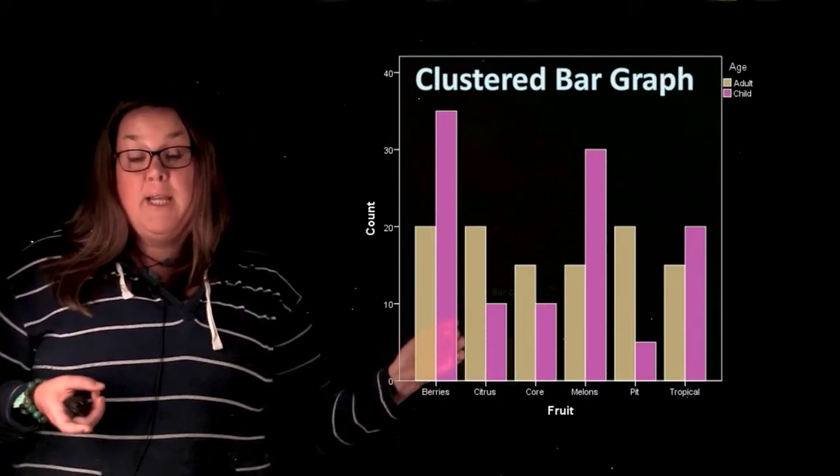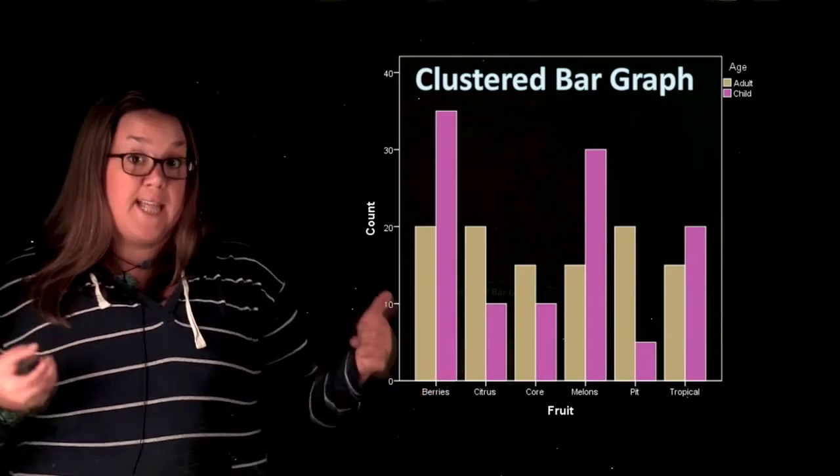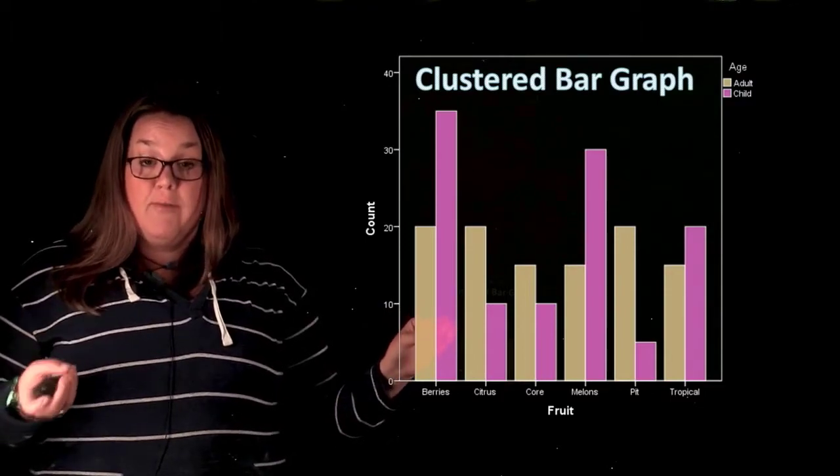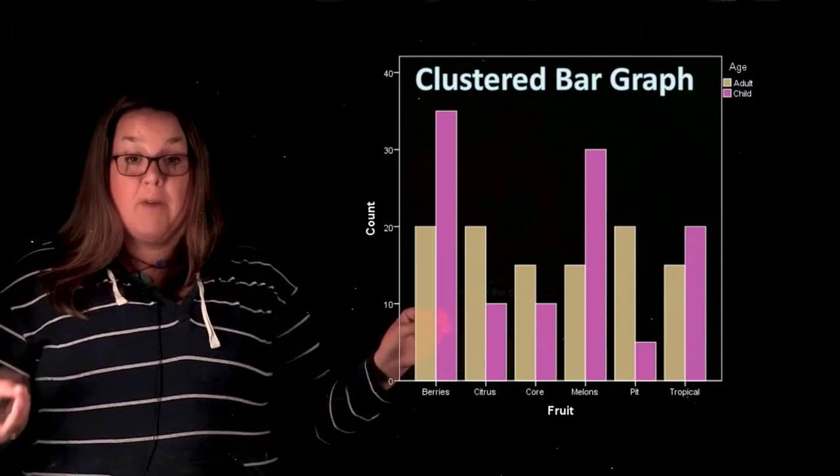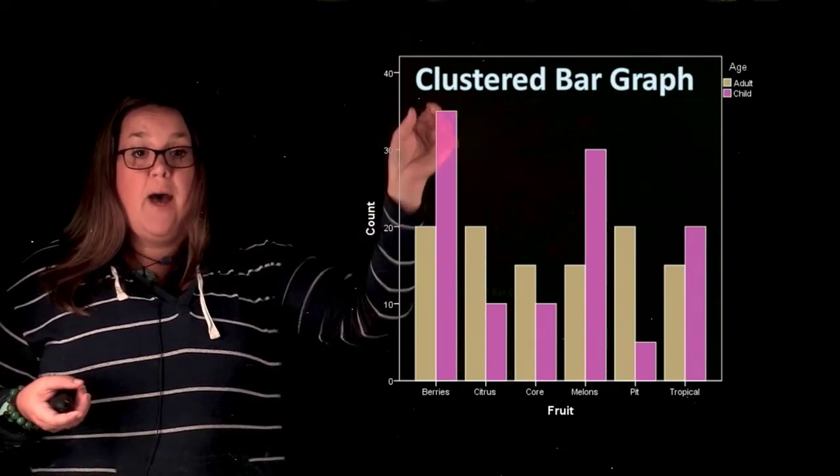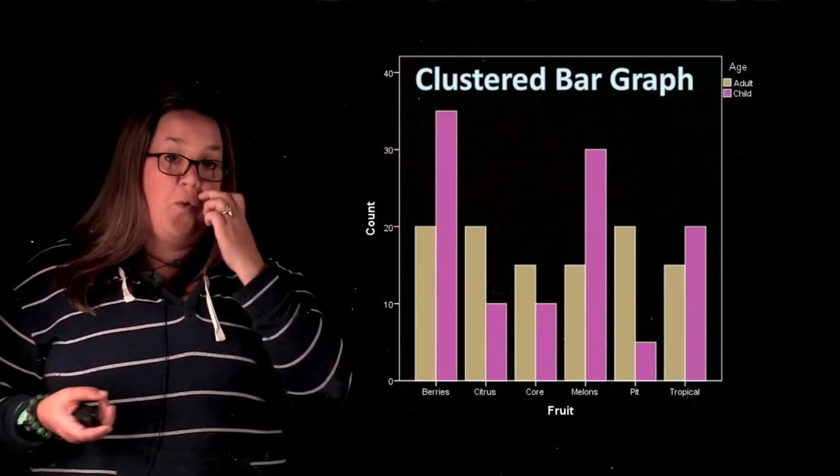Now the one immediately next to it is going to be the same variable, right? Still berries. But we're identifying that it's the other of the two categorical variables by having it be pink for the children. And so here we have about 35 for children whose favorite fruit is berries.